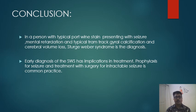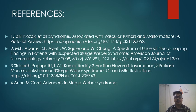In conclusion, in a person with typical port wine stain presenting with seizure, mental retardation, typical tram-track gyral calcification, and cerebral volume loss, Sturge-Weber syndrome is the diagnosis. Early diagnosis has important implications for treatment. Prophylaxis for seizure and surgical treatment for intractable seizure is common practice. Thank you.